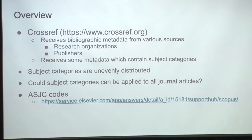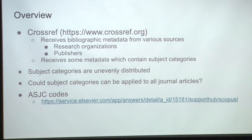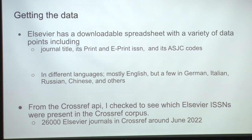Elsevier uses their system called All Science Journal Classification. You can go to their website — I can make the slides available later — and I'll show a little more later. Basically, from their website, they have in-house experts that determine the subjects based on the journal title and the contents that they publish. I used Elsevier basically because this was a prototype project, and it was a machine-actionable dataset — the lowest-hanging fruit.